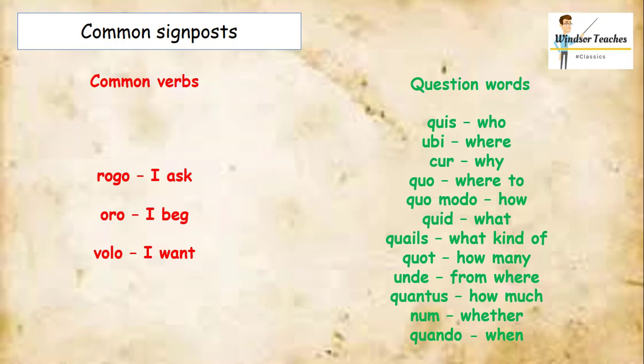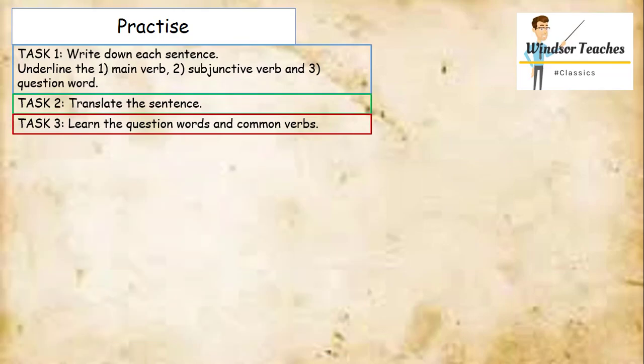Okay, so we've gone through the theory, we know what to expect, we know what sort of common verbs and question words we might run into. Let's now practice. Now get some practice based on the information from today's video. So first of all, we're going to write down each sentence, and we're going to underline one, the main verb, two, the subjunctive verb, and three, the question word, all of which are signposts pointing towards it being an indirect question. We're also going to have a go at translating the sentence, and as a follow-up, we're going to learn the common question words and common verbs that we may find in a typical indirect question.